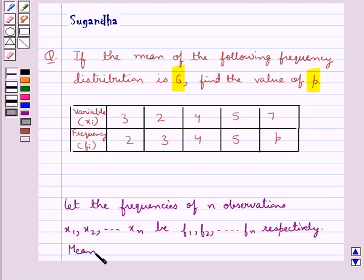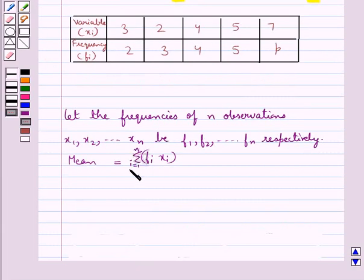Then the mean is equal to summation fi xi where i goes from 1 to n upon summation fi where i goes from 1 to n. This is the key idea to be used for this question.